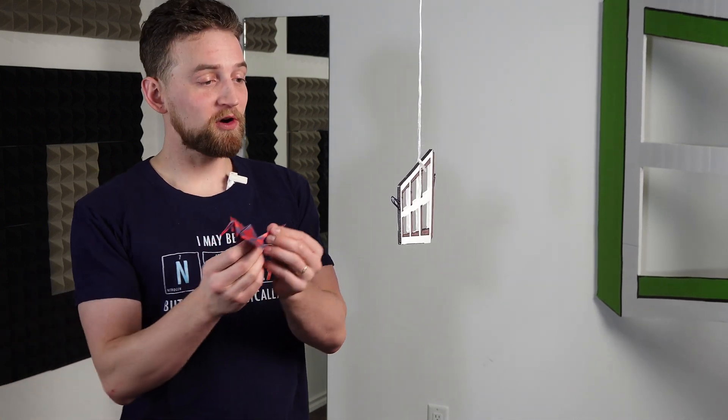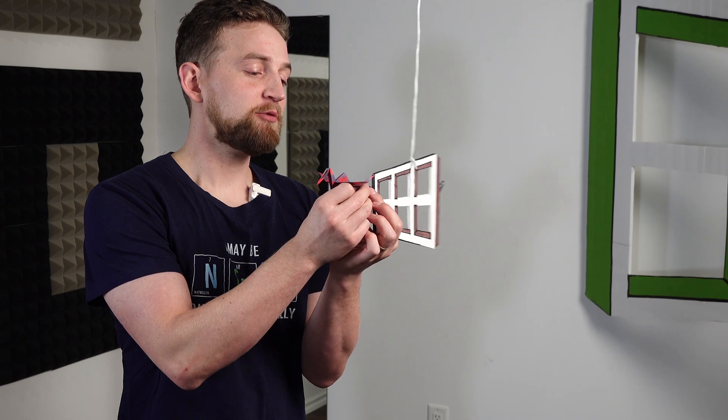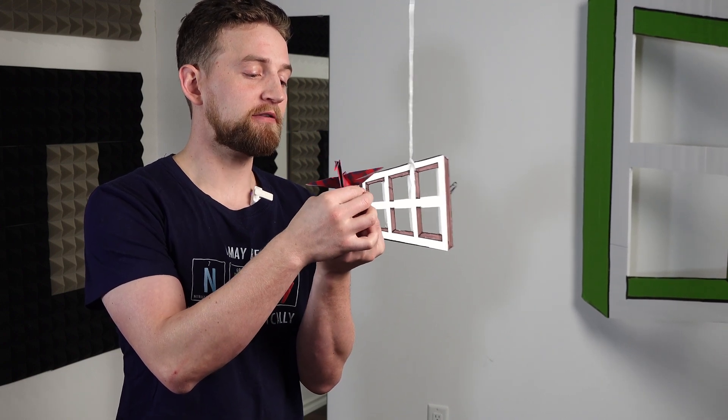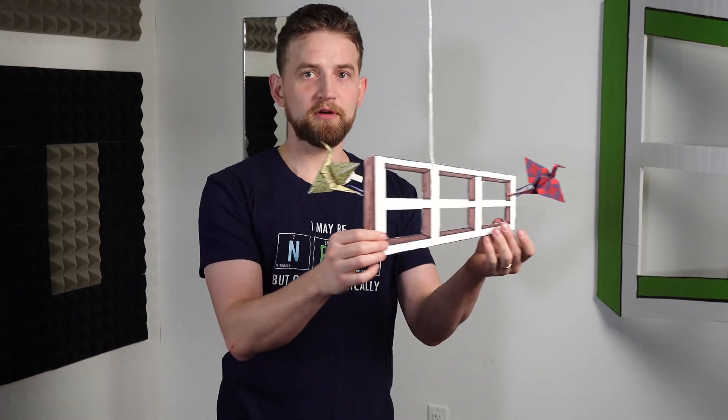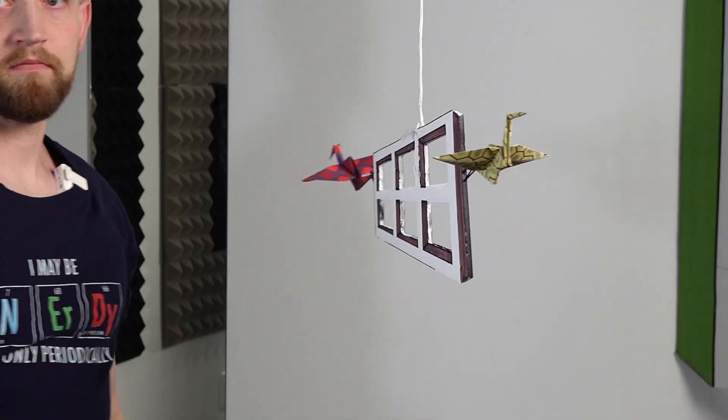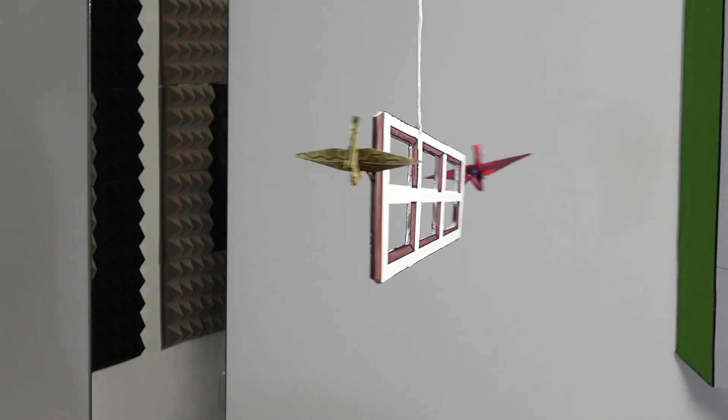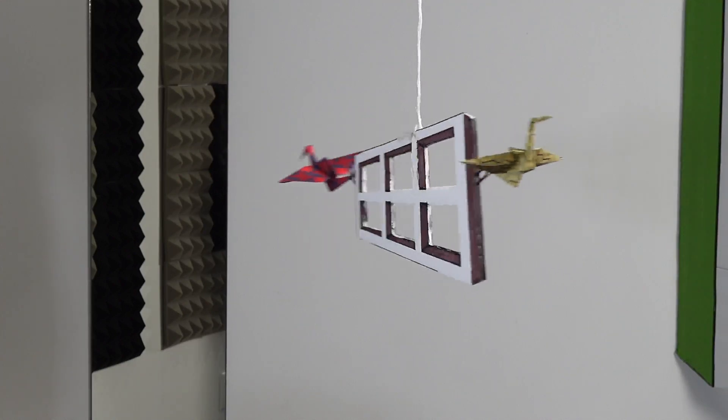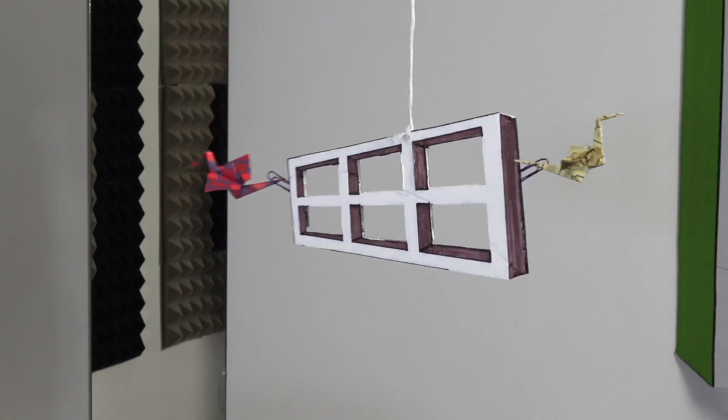This gets even stranger. I'm going to attach a couple of origami cranes to either side, which are clearly going to be rotating back and forth. There we go. It appears that the origami cranes are flying around the window as the window flaps back and forth. What a cool effect. That's so cool.